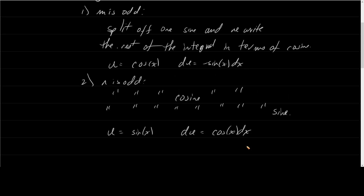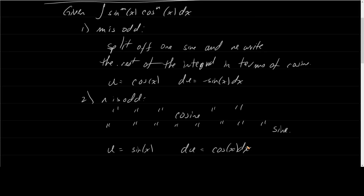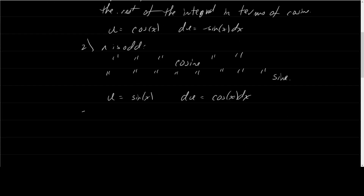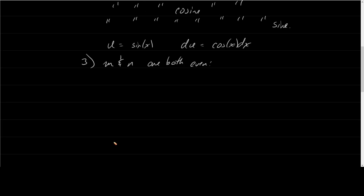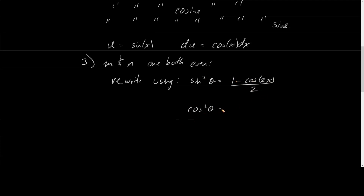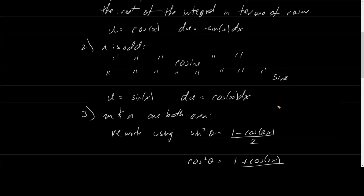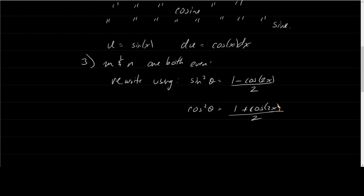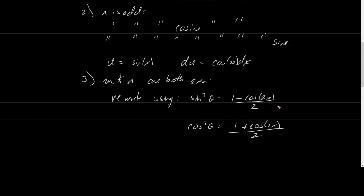If they're both odd, it doesn't matter which of these two you choose — either one will work. The third scenario is where they're both even. If m and n are both even, we're going to use the power reduction formula: sine squared equals (1 minus cosine 2x) over 2, and cosine squared equals (1 plus cosine 2x) over 2.